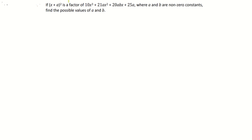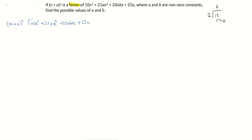The key word here is 'factor', and we know a factor is when a number divides into another number. So 2 is a factor of 12 because we have a remainder of 0. So that's the approach we're going to have here — we're going to divide x plus a all squared into our 10x cubed plus 21ax squared plus 20abx plus 25a, and we should get a remainder of 0.